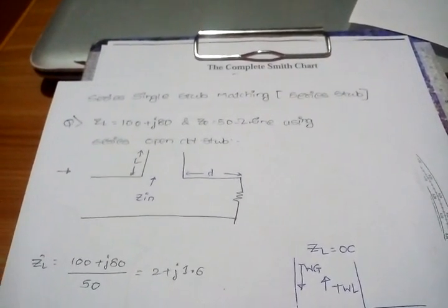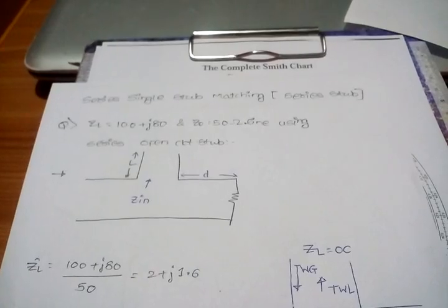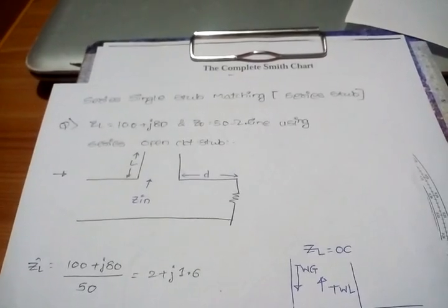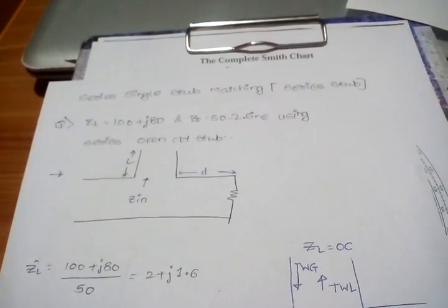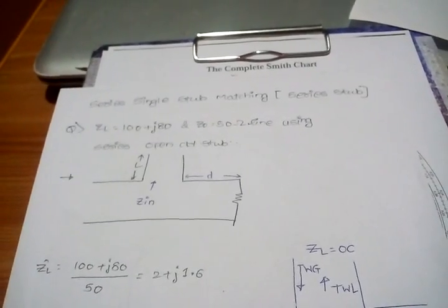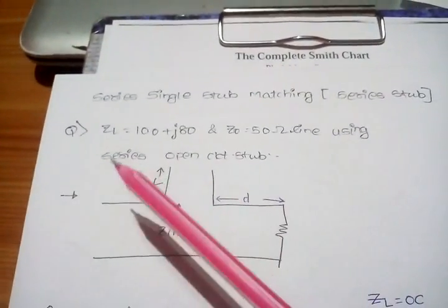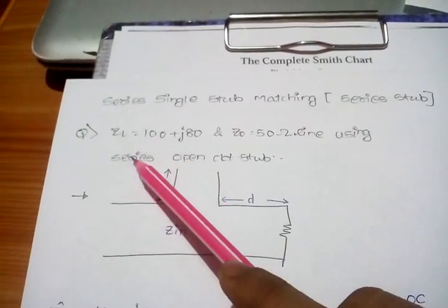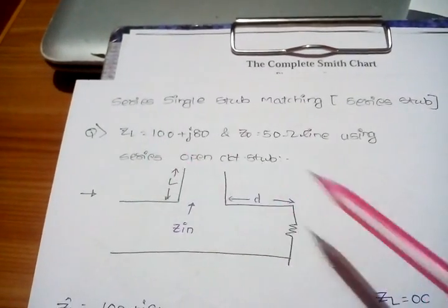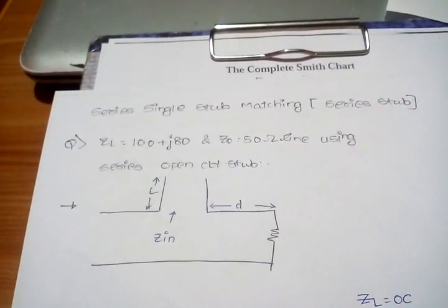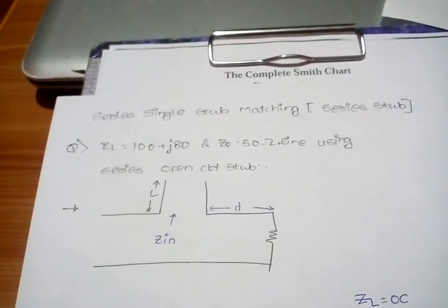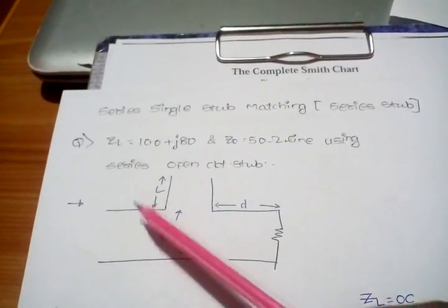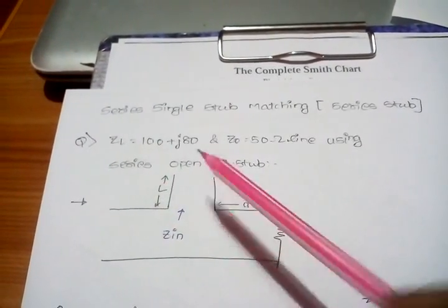I'll be performing each of series and parallel and explaining the shortcut or unique step for the other. The question we have: load impedance ZL = 100 + j80, characteristic impedance Z0 = 50, and it is given that it's a series open circuit.